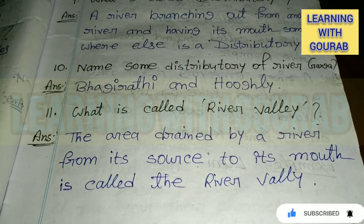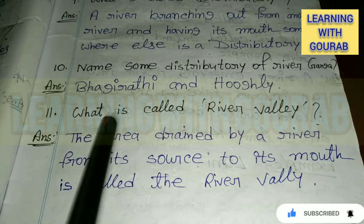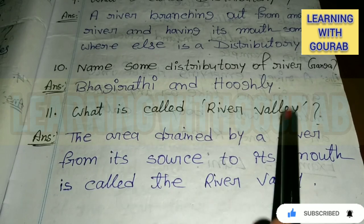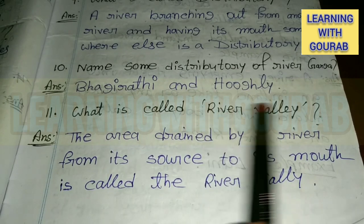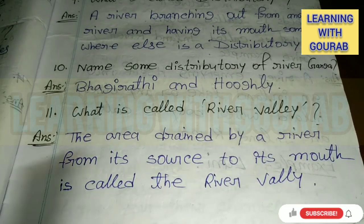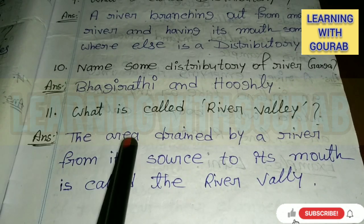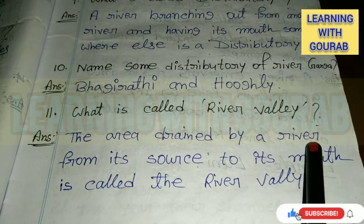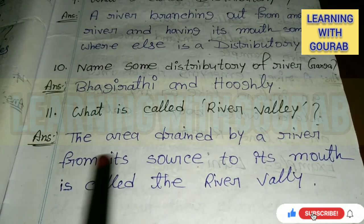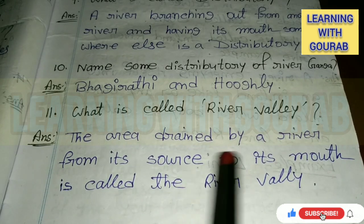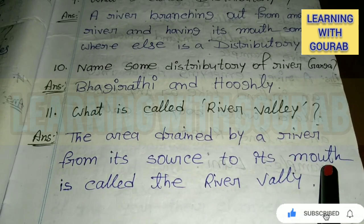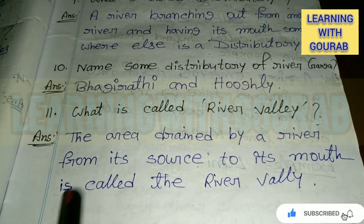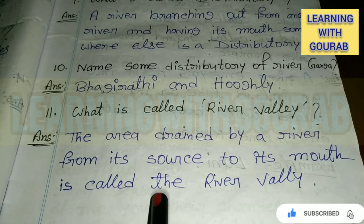Next question: What is called a river valley? Answer: The area drained by a river from its source to its mouth is called the river valley.